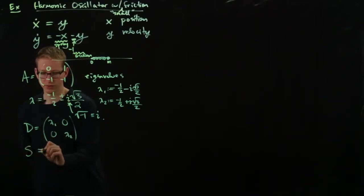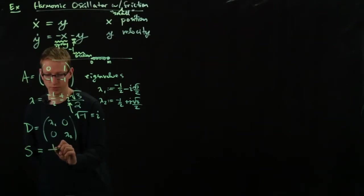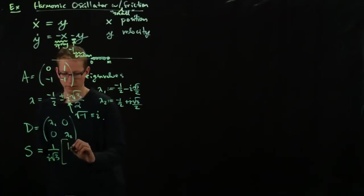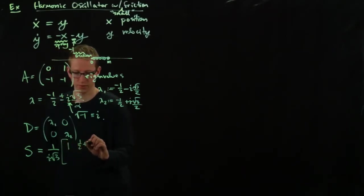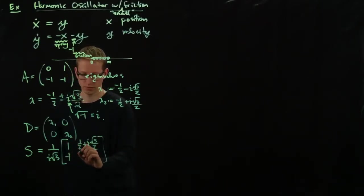So one similarity transformation that works is 1 over i root 3, 1, 1 half plus i root 3 over 2. And here there's a negative 1 and it's 1 half with a negative sign i root 3 over 2.